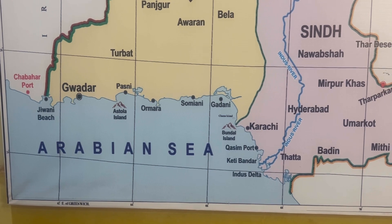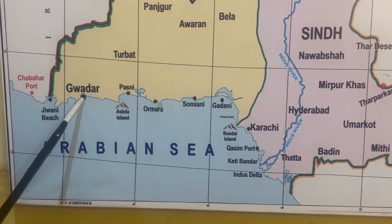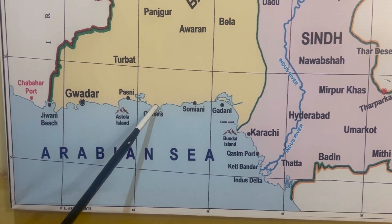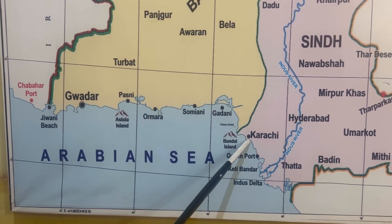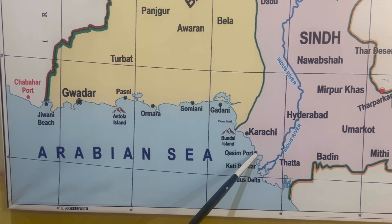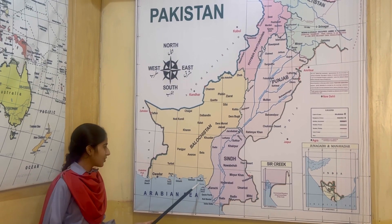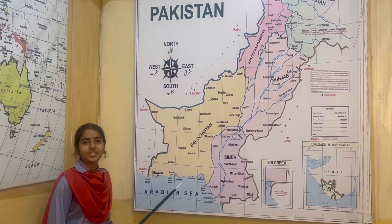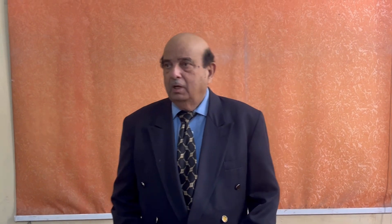Pakistan has five seaports, namely Gwadar Port, Pasni Port, Ormara Port, Karachi Port, and Qasim Port. Pakistan has large industries of ship breaking at Gadani Beach. Gadani Beach is nearer to Karachi.